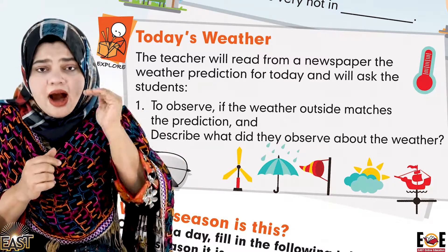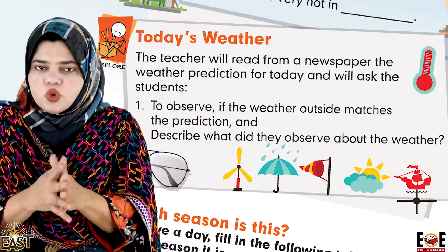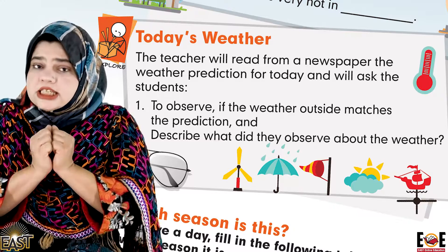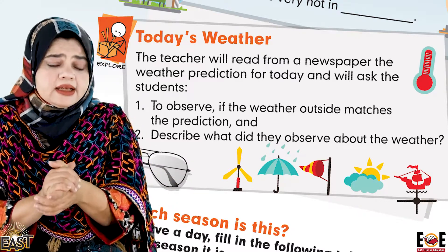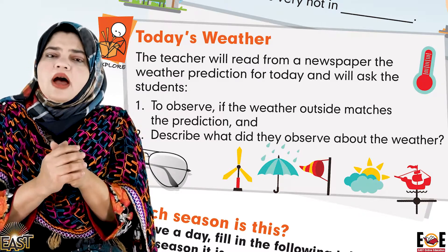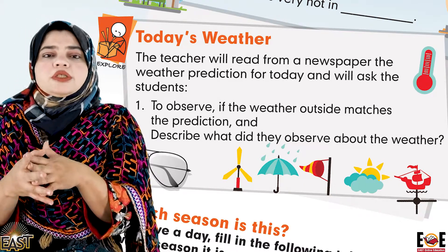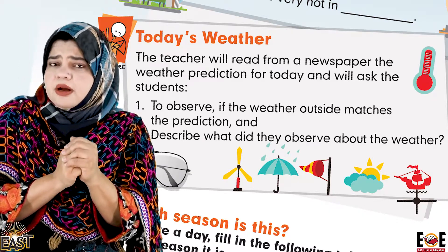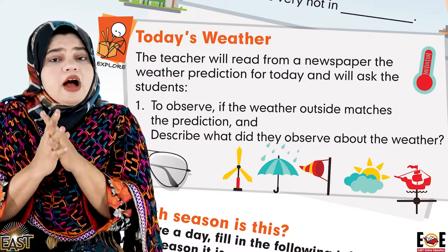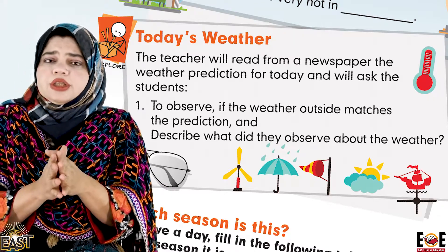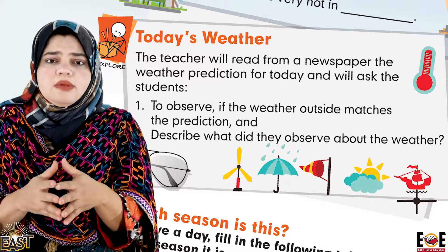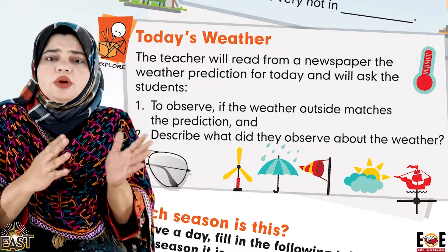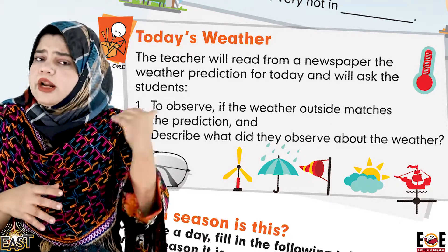Joh forecast hui hai, joh prediction hui hai aaj ke mausam ke baare mein — yaani ke maine aaj subha dekha, maine jo Google kiya ke today's weather prediction kya hai, toh usmein dekha ke aaj hamaara jo hai cold waves hongi, yahan pe sardi hogi. Winter season chal raha hai, usmein dekha tha ke aaj cold waves hongi, aapke paas temperature aapka nine to ten degree centigrade hoga, aur aapko sardi mehsus hogi. Sun aapka jo hai woh naada nahi hoga, cloudy weather hoga.